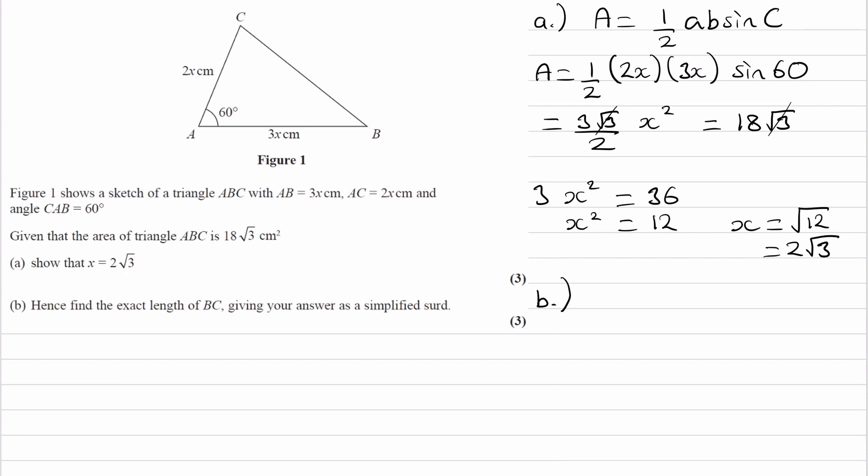For part B, we want to find out the exact length of BC. So to do this, again when you have two sides and the angle between them, you can work out the opposite side by doing the cosine rule. So that equation would be a² = b² + c² - 2bc cos A.